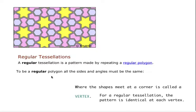And if you remember, a regular polygon—all the sides and angles must be the same.